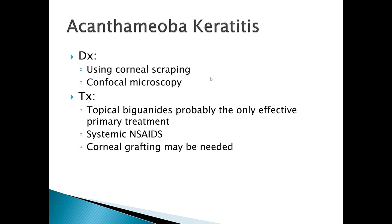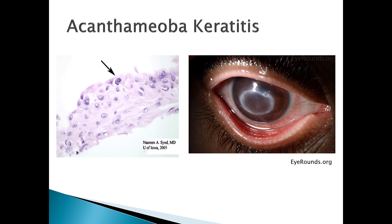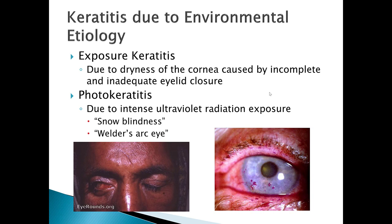Diagnosis requires corneal scraping examined under confocal microscopy — clearly above the primary care level, but that's how it's diagnosed. Treatment includes topical biguanides, which is probably the most effective primary treatment, systemic NSAIDs, and corneal grafting may be needed as well. Here's the microscopy showing the protozoan in the tissue layers, and they also have a halo-type appearance visible on the right-hand side.